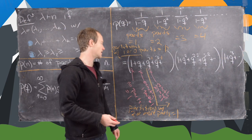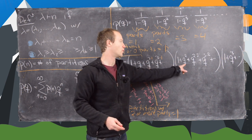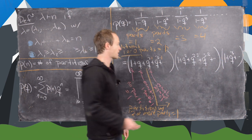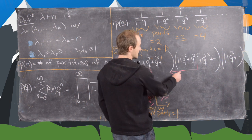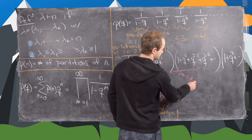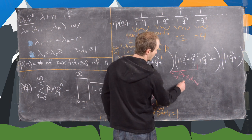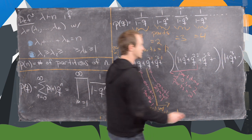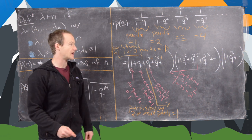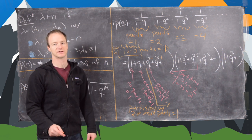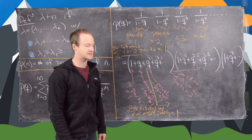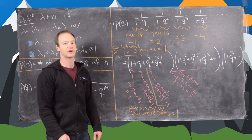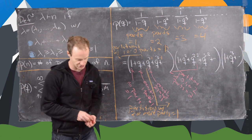The same interpretation applies to the other factors. For parts equal to 2: the first term is no parts equal to 2, then 1 part equal to 2, 2 parts equal to 2, 3 parts equal to 2, and so on. So cutting the series at a certain point gives partitions with 0, 1, or 2 parts equal to 2, while everything beyond gives partitions with 3 or more parts equal to 2. This interpretation holds for all the factors. Now let's clean up and look at generating functions for some restricted partitions.